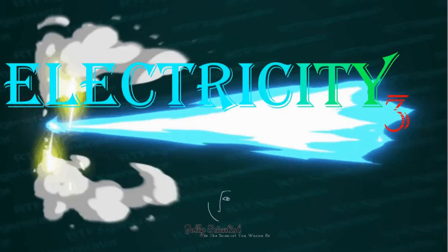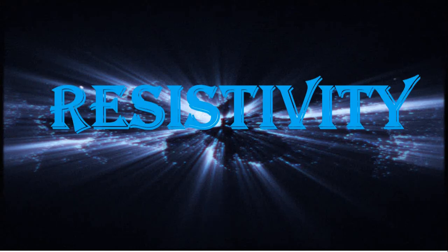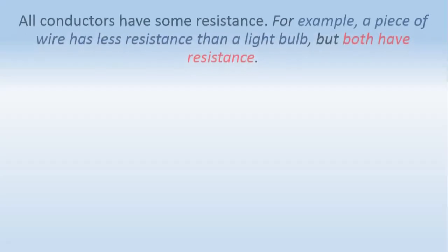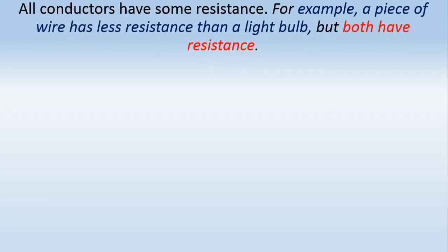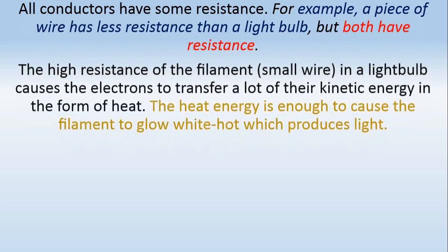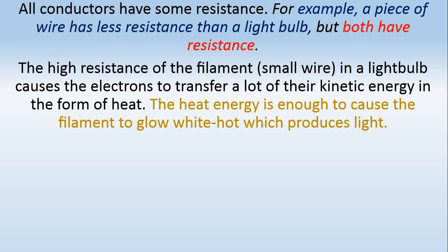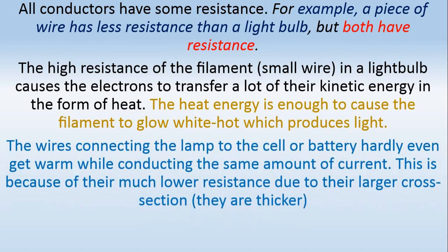Electricity 3: Resistivity and Conductivity. All resistors have some resistance. For example, a piece of wire has less resistance than a light bulb, but both have resistance. The higher resistance of the filament causes electrons to transfer a lot of kinetic energy in the form of heat. The heat energy causes the filament to glow white hot, producing light. The wire connecting the lamp to the battery hardly gets warm while conducting the same amount of current, because of its much lower resistance due to its large cross-section.